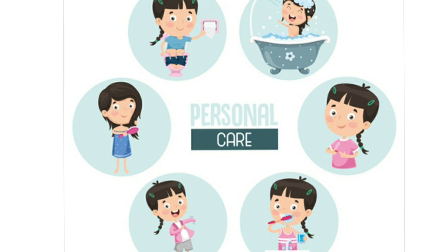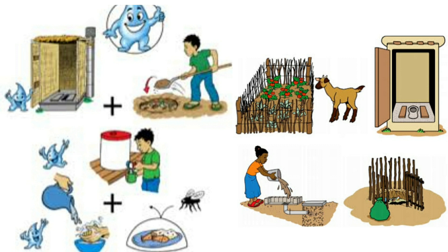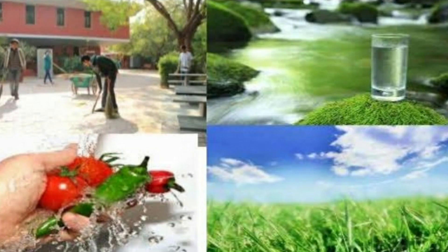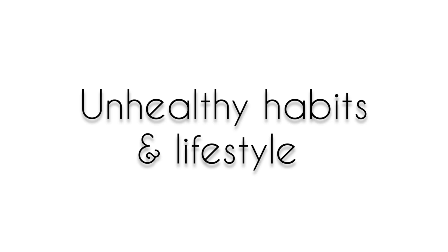Diseases can be prevented by maintaining personal and community hygiene. Personal hygiene is taking care of one's own body, maintaining cleanliness and avoiding germs. Community hygiene is the collective effort to keep the community clean — for example, using washrooms in a proper way in school or in any public place, or disposing of waste in a proper way, which will help in preventing germs and diseases.